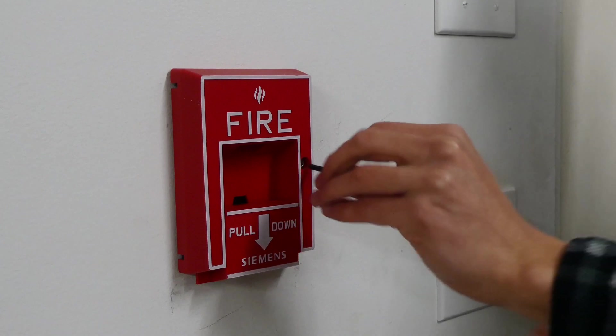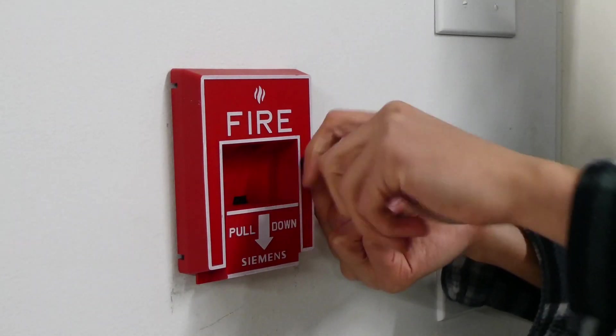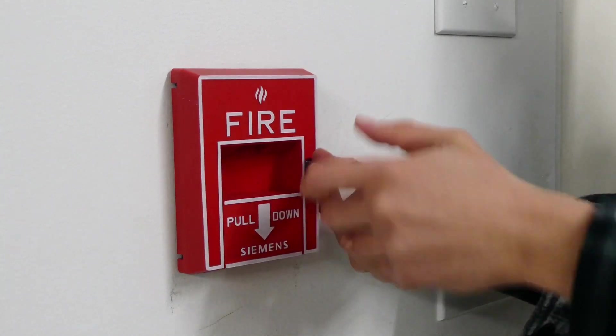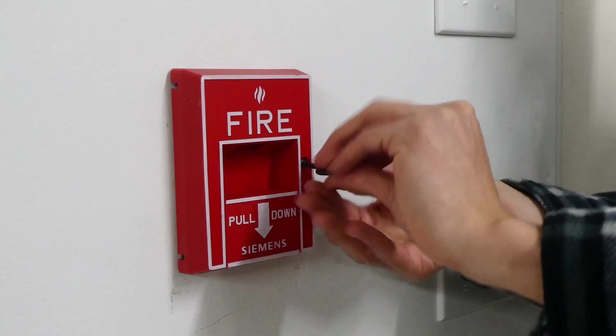And we can go ahead and reset the fire alarm pull station. It just takes a hex key, and after a few twists the handle will just pop back up, because it's spring loaded, and then when that happens we can just re-tighten the hex screw.